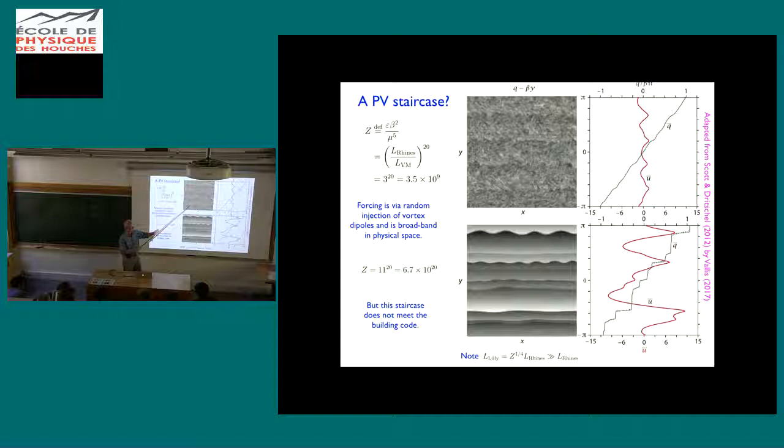So if you're doing what I originally described with the homogeneous forcing, the forcing is destroying or opposing material conservation of PV everywhere and every when. Whereas the Scott and Dritchell forcing is very broadband in spectral space but it's localized in physical space. So that may, I think if you were looking for a really qualitative difference between this calculation and the ones I was describing before, it's the fact that the forcing is physically confined in physical space and it's not destroying PV conservation.